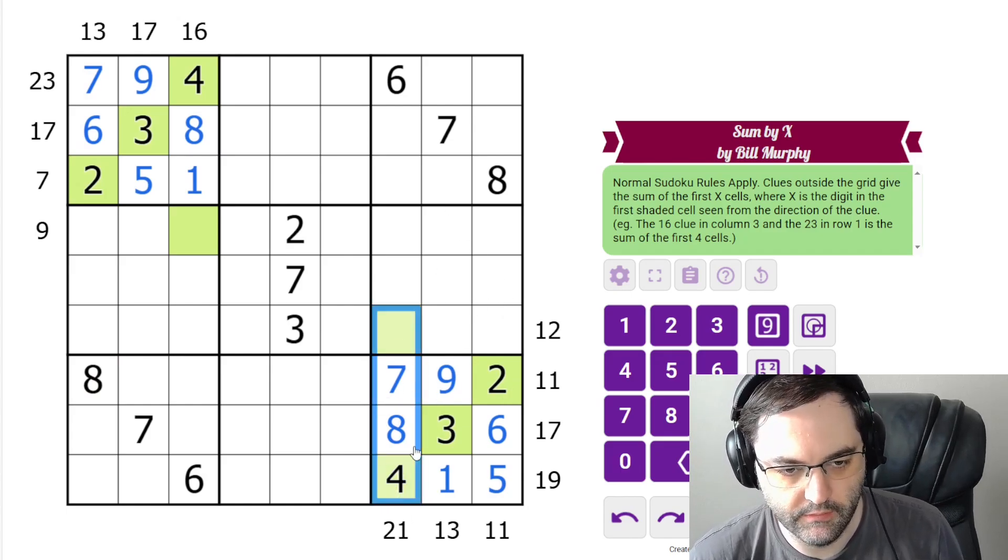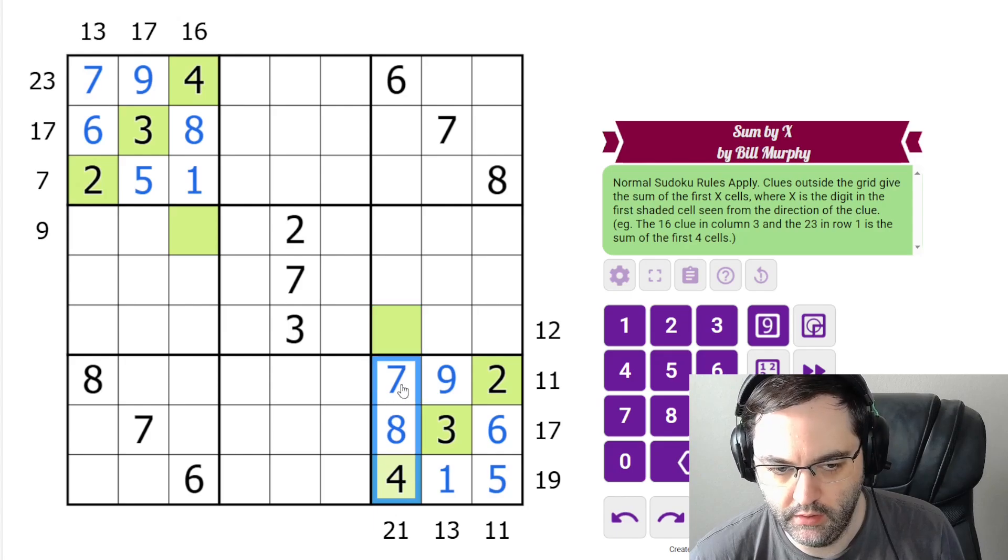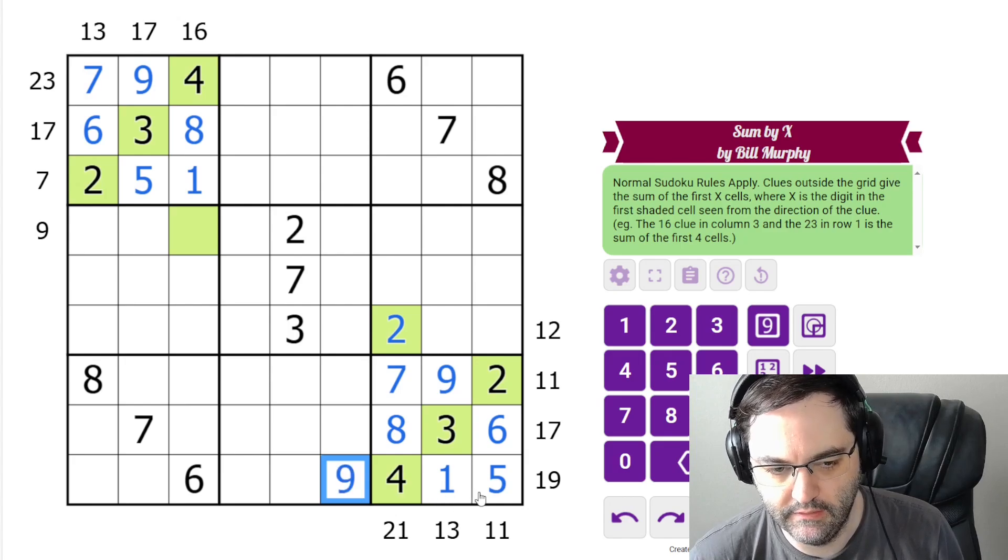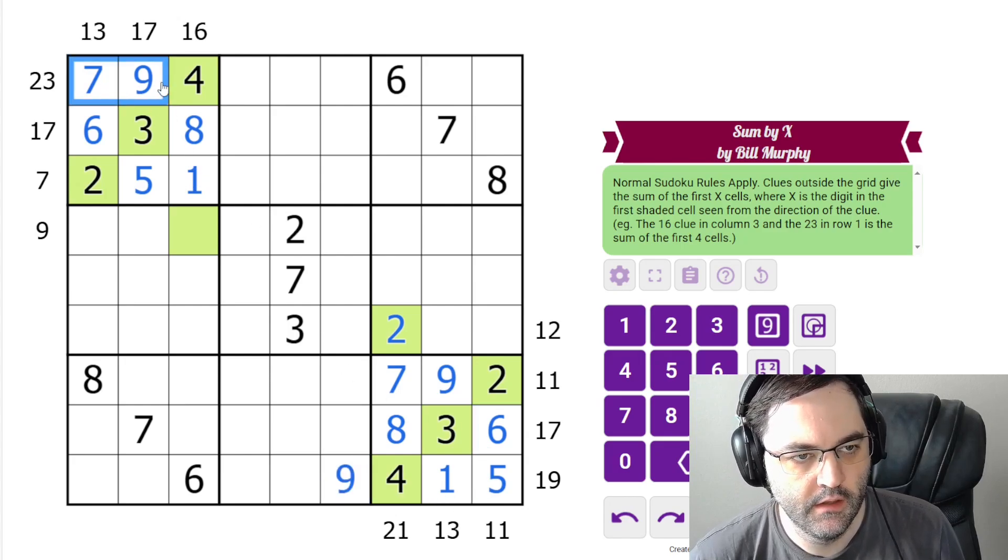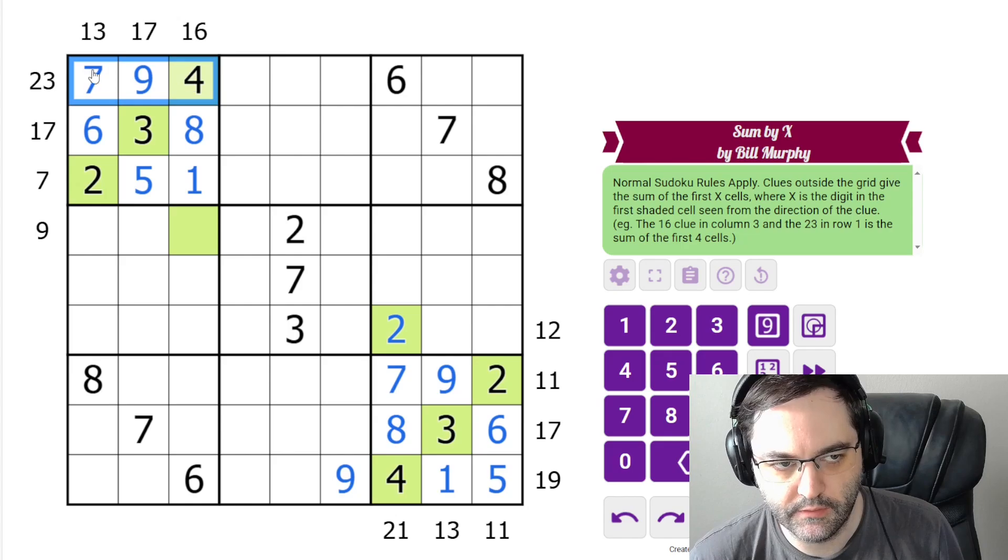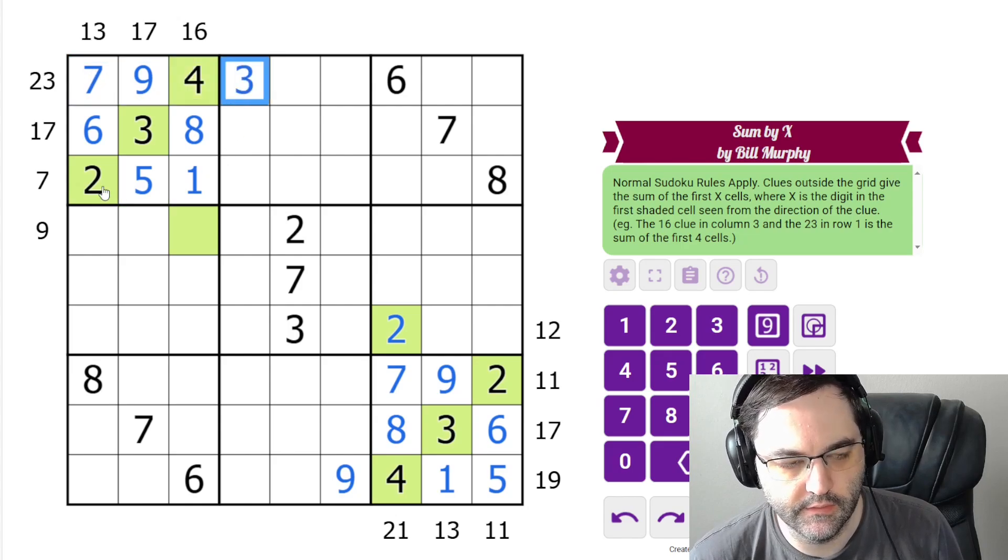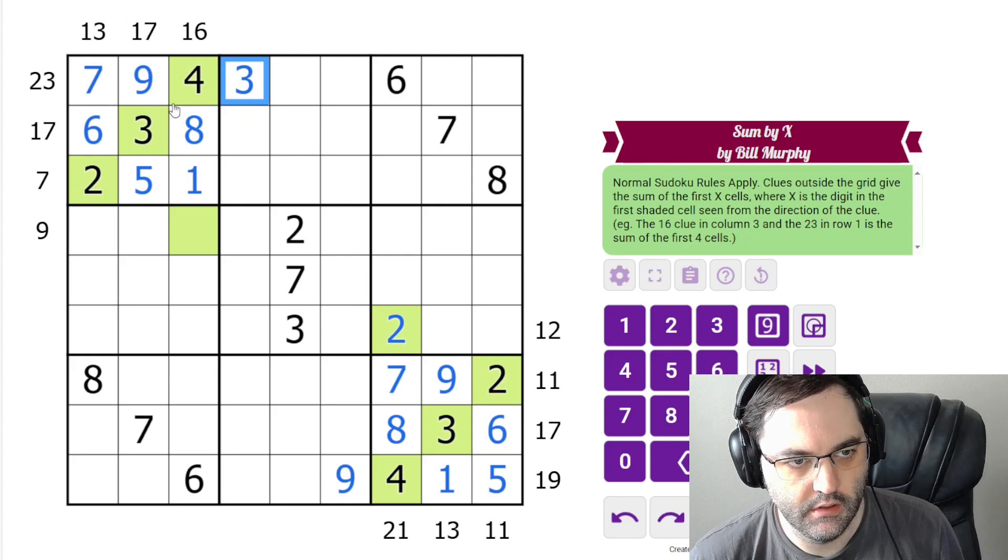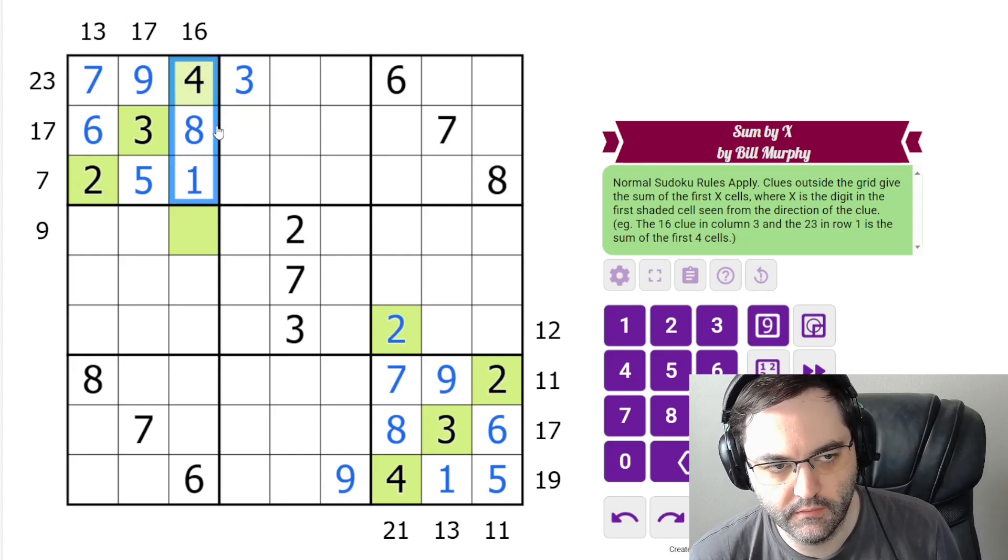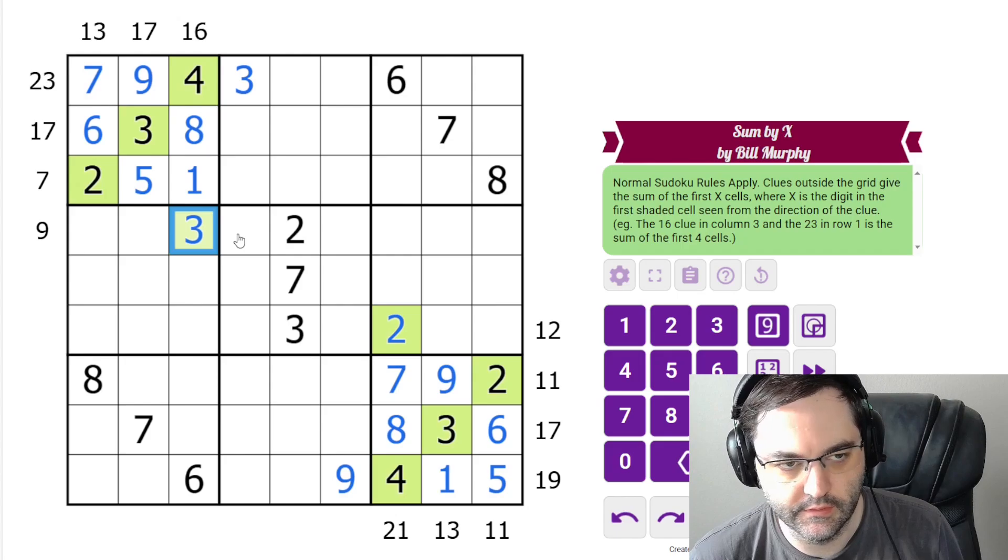This clue, we need 4 cells summing to 21. We have 19 already, so this is a 2. Here we need 19 in the first 4 cells and we have 10, so this is a 9. Up here we need 23 in the first four cells. This is 20, so this is a 3. And this one, 4, 8, and 1 is 13, so this is a 3.